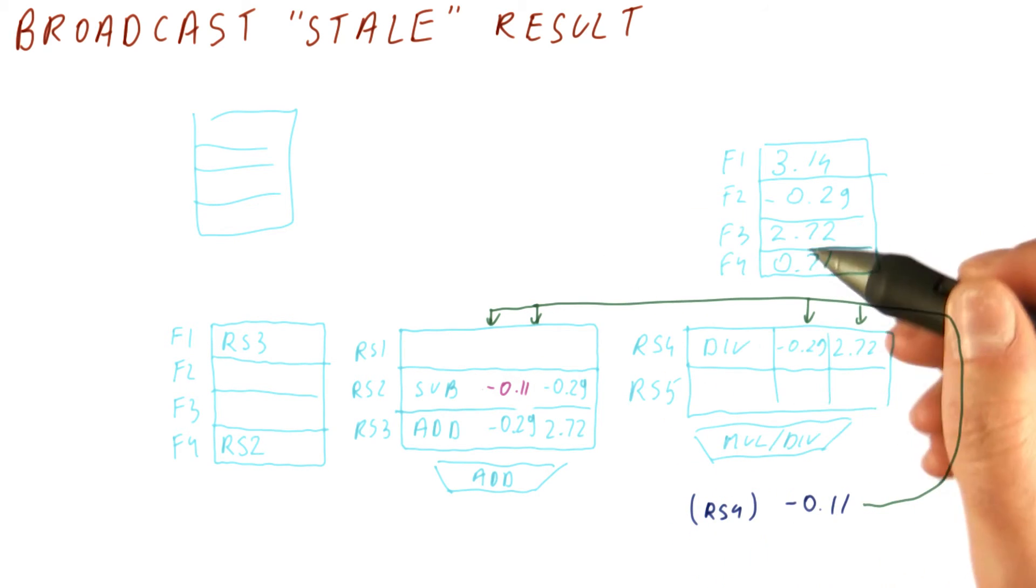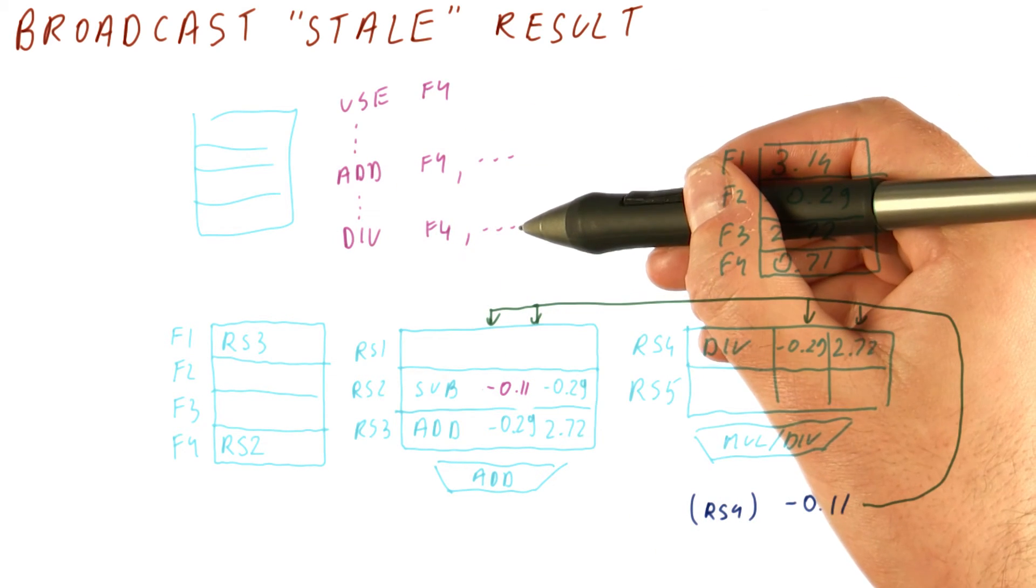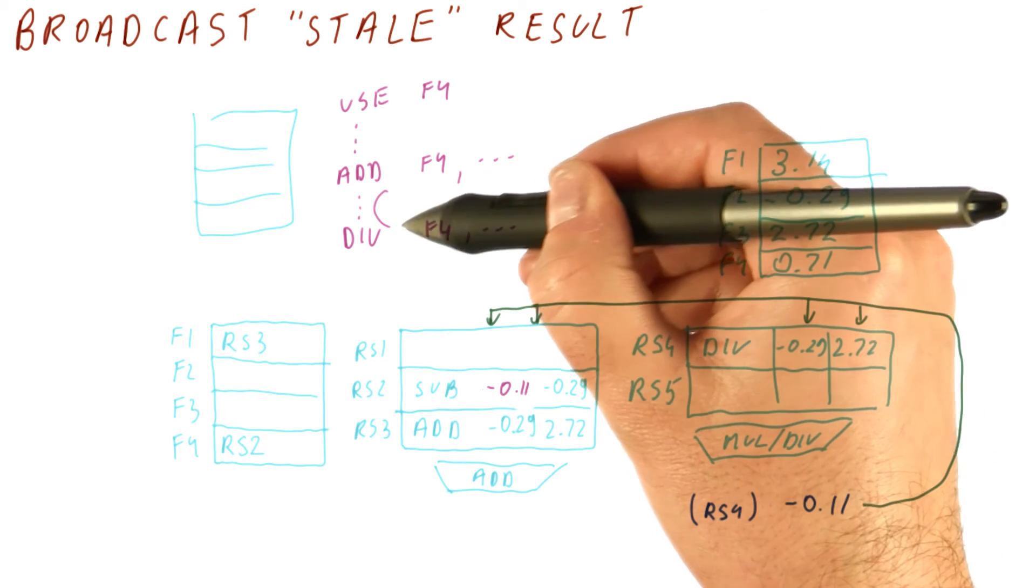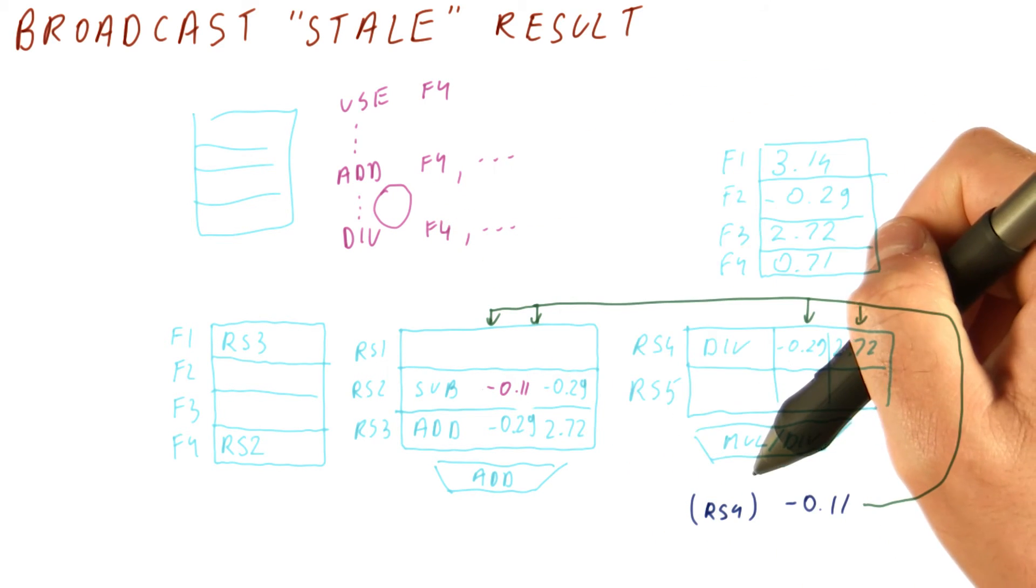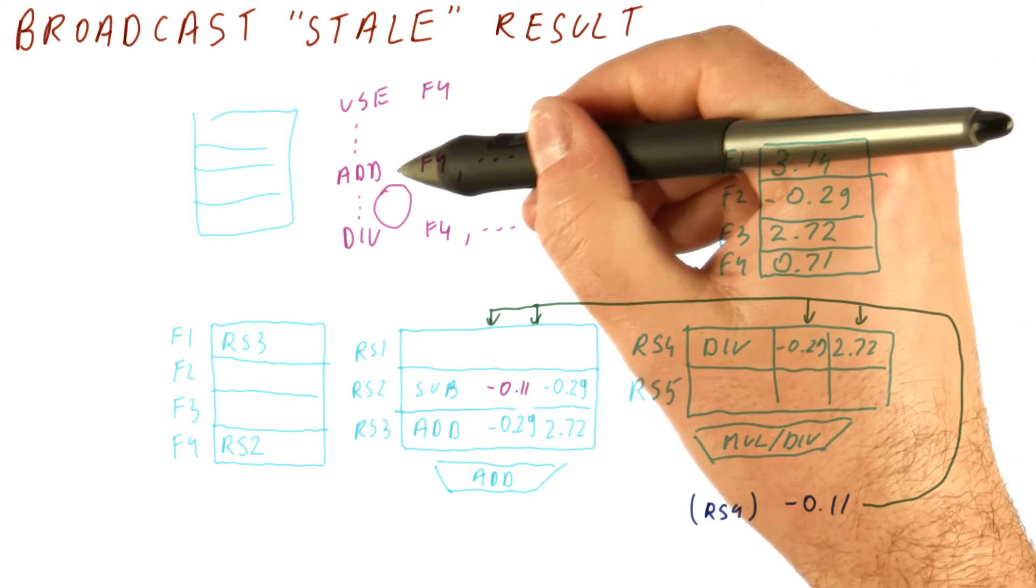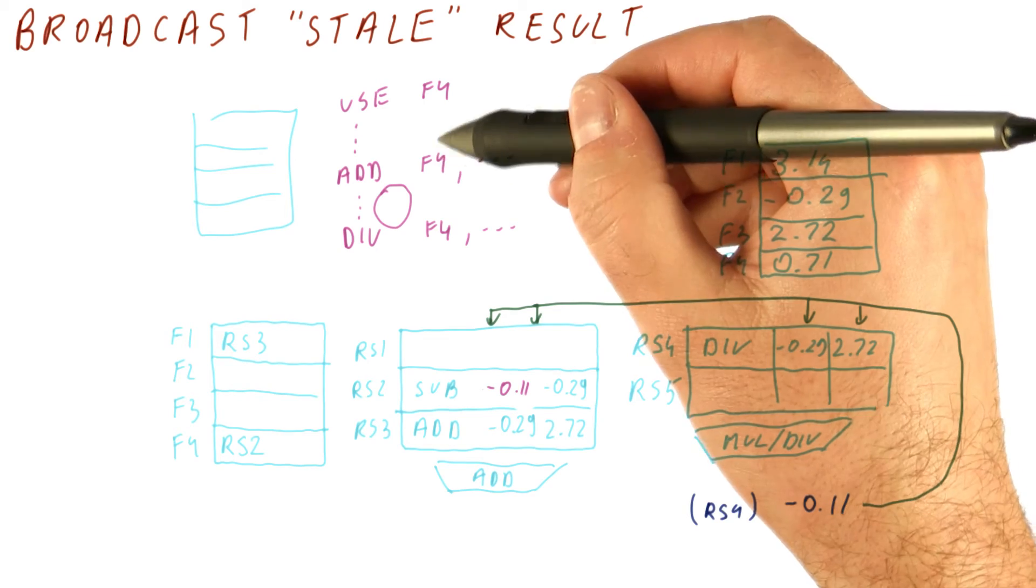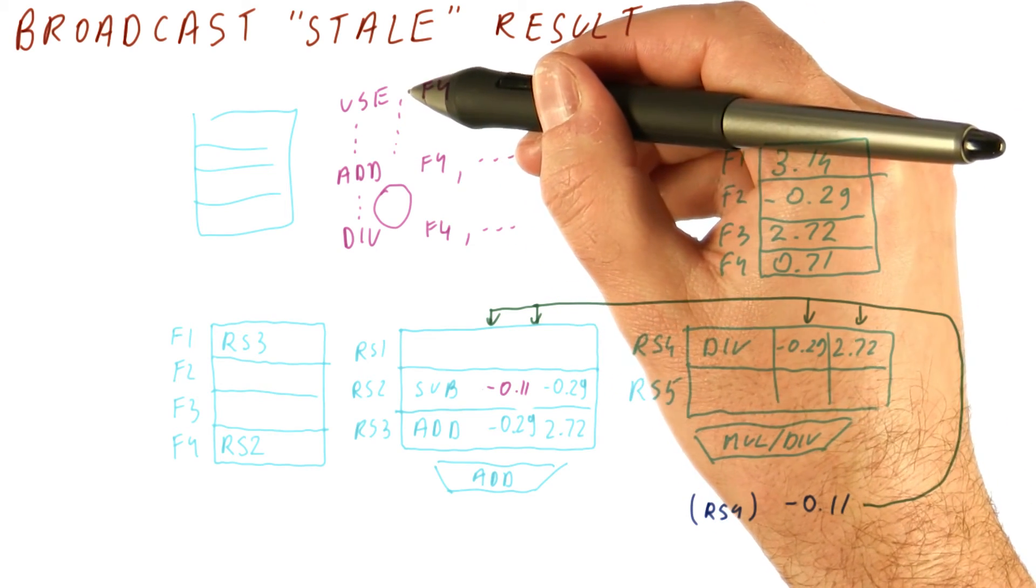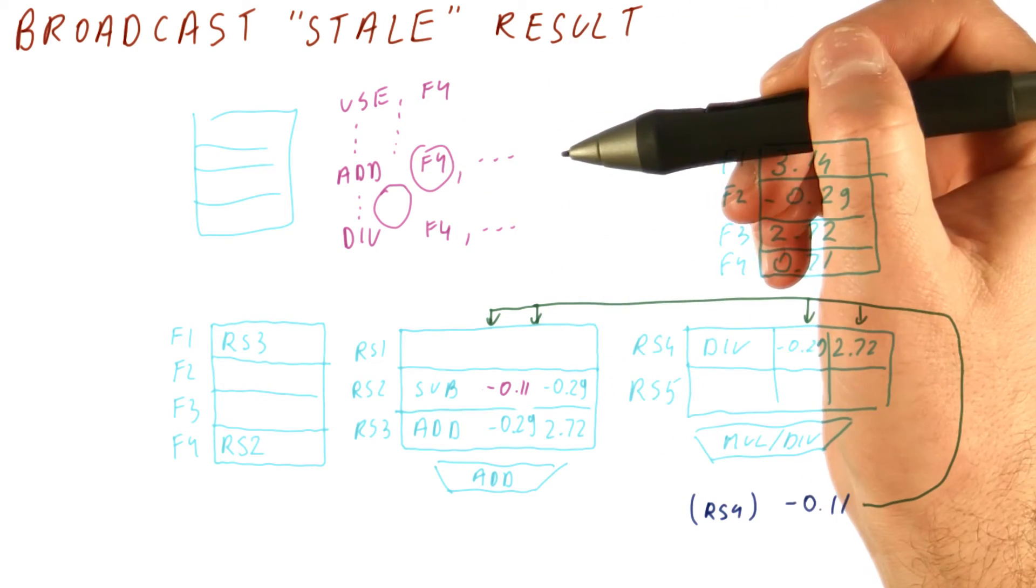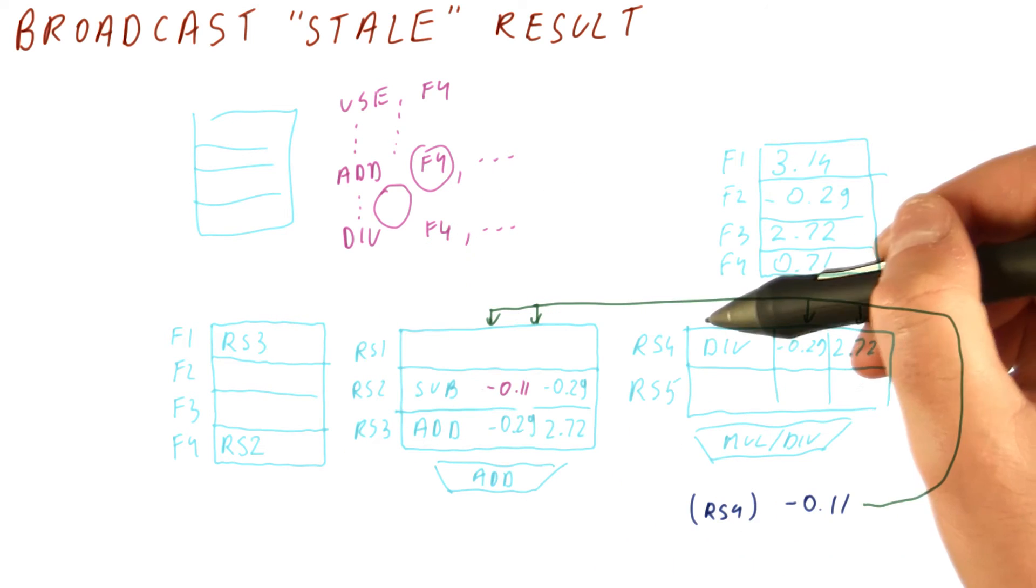So this is basically the situation. We had a divide come first. For a while, everything that reads F4 should be getting the value from the divide. After the add here has renamed F4 to point to it, all the instructions that come after that are supposed to use this value when they read R4. So this is entirely correct behavior.